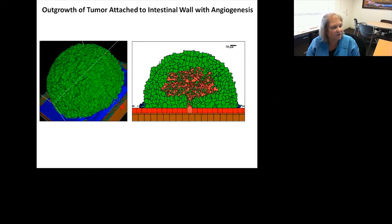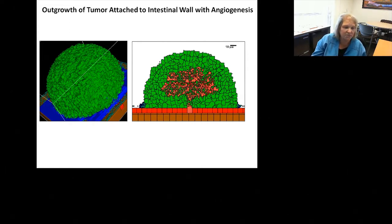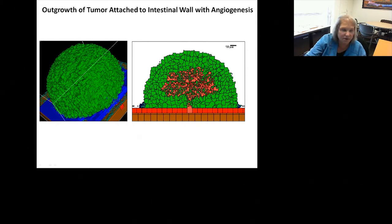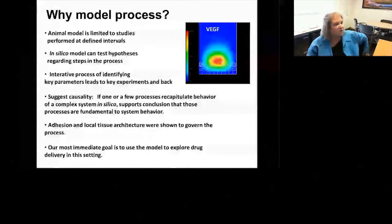We can look at that through the model, but modeling vessels in CompuCell 3D has been a little disappointing. You can build vessels, but they don't yet look like they have the right kind of branching. Sprouting is quite difficult to control in the CompuCell 3D framework. I'll come back in just a moment to how we think we can solve that problem in the next phase of work.